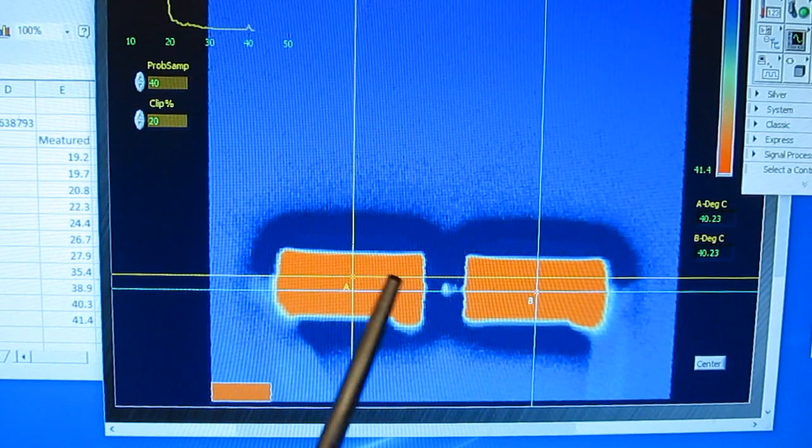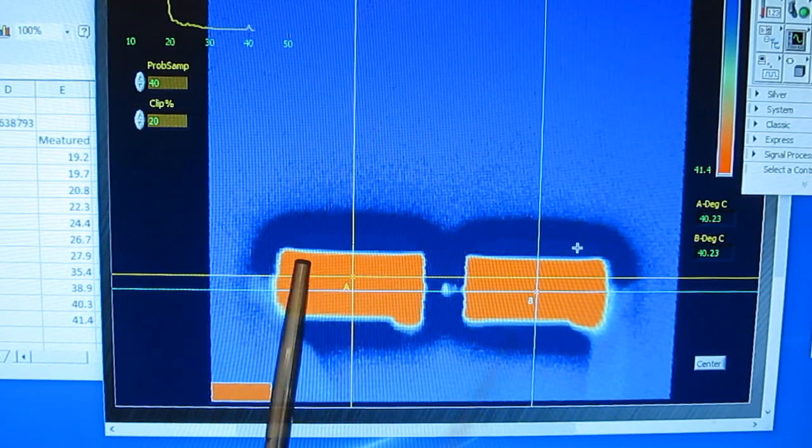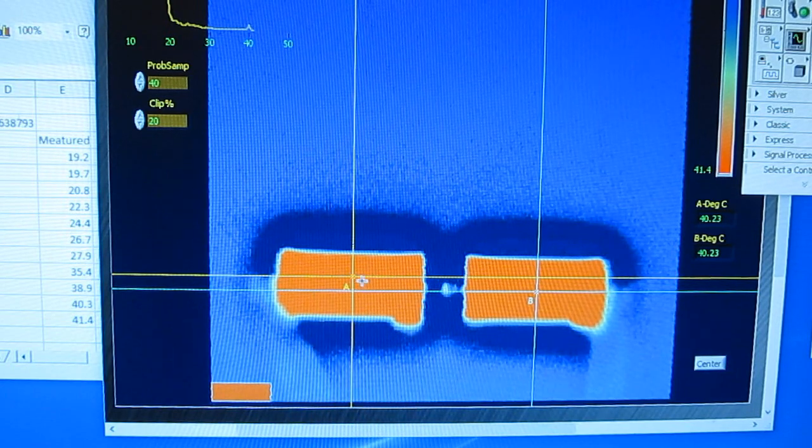This is looking at the two power resistors that we just used, and we can see these are both roughly at 40 degrees Celsius.